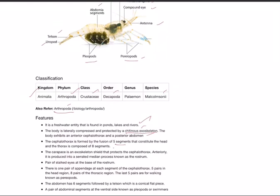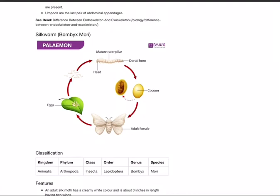The body exhibits an anterior cephalothorax and posterior abdomen. The cephalothorax is formed by fusion of five segments of the head and eight segments of the thorax. The carapace is an exoskeleton shield that protects the cephalothorax. It has stalked eyes at the base of the rostrum. There is one pair of appendages at each segment. The last five pairs are for walking, known as periopods. The abdomen has six segments followed by a telson. Pleiopods or swimmers are present, and uropods are the last pair of abdominal appendages.